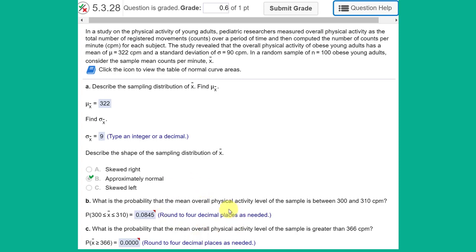Okay let's get into these last two questions. They want us to find the probability that the overall mean physical activity is between 300 and 310 and then the second part is the probability that the mean physical activity is greater than 366. You can really step on yourself trying to do that in the table. So let's bring up StatCrunch.